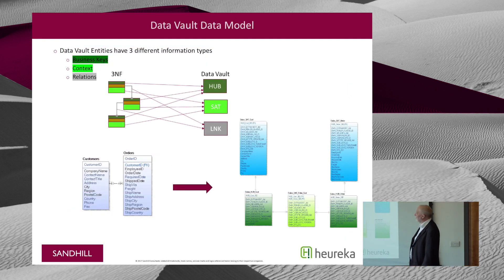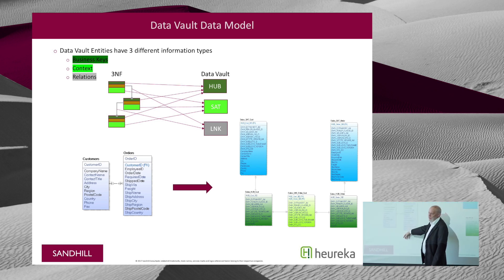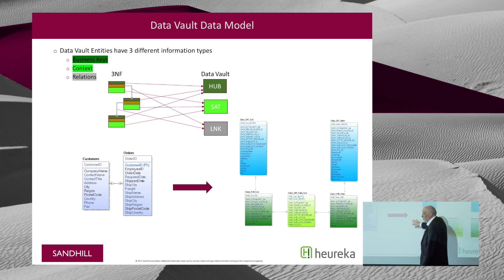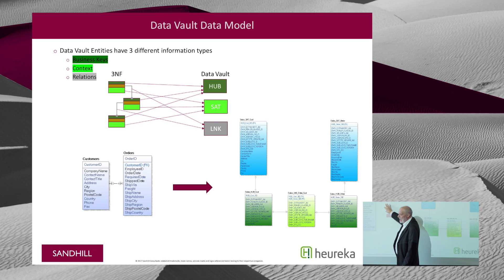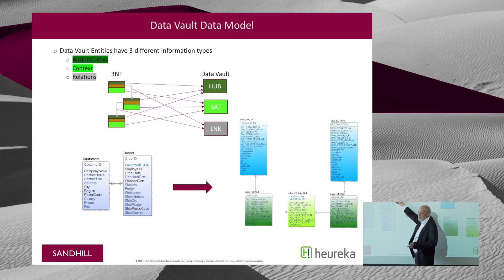If you had a new entity — say a new product entity — then there'd be a new hub for the product hub, and there'd be a satellite for those attributes. If there was a link between product and orders, there'd be a new link table. And if you have an order line table that links product to orders, and it doesn't have its own identity — if the identity is just the orders and the products — then that would be a link with satellite as well.